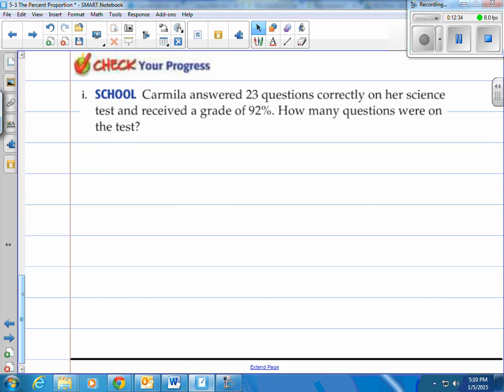All right, you give it a shot here. Carmilla answered 23 questions correctly on her science test and received a grade of 92%. How many questions were on the test? Okay, so she got 23 questions correct, but we don't know how many questions there were. Well, we do know the part. 23 is going to be your part, 92 is going to be your percent, we're looking for the whole.